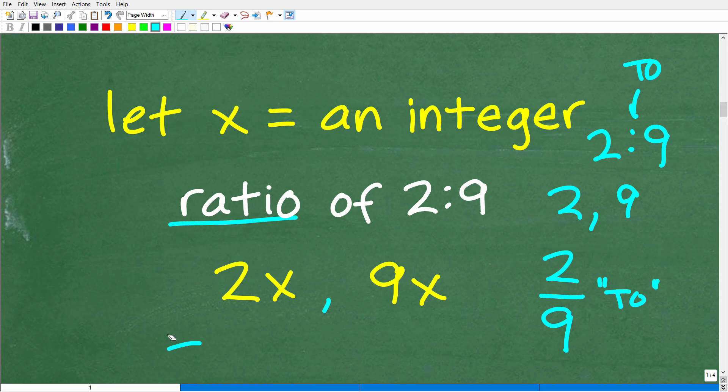So whatever this integer is, let's say this integer was one. We would still have the same ratio if we wrote these integers as 2x and 9x, right? So if x was one, this would be two times one. So 2x and 9x are two integers in the ratio of two to nine.